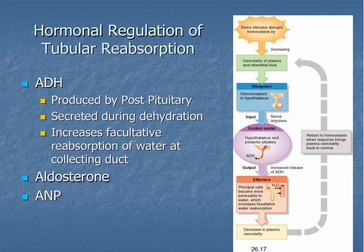Tubular reabsorption at the collecting duct is regulated by several hormones, most importantly ADH or antidiuretic hormone. ADH is produced by the posterior pituitary and secreted in times of dehydration when blood osmolality is higher than normal. ADH increases the facultative reabsorption of water at the collecting duct.